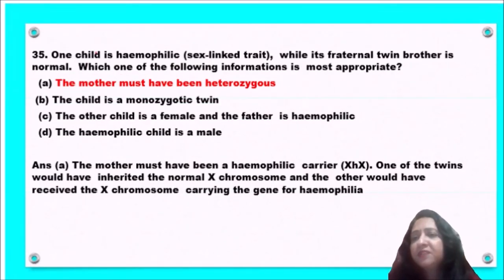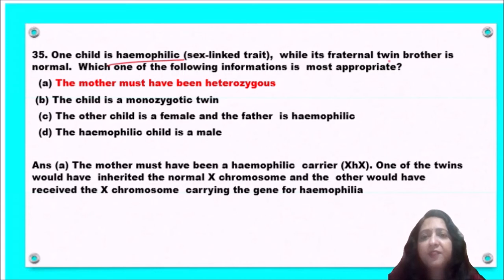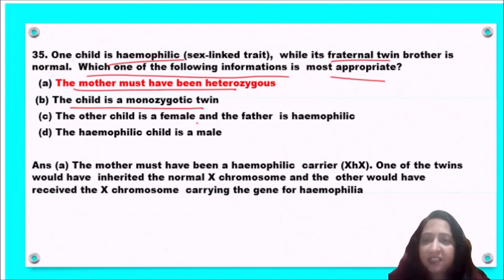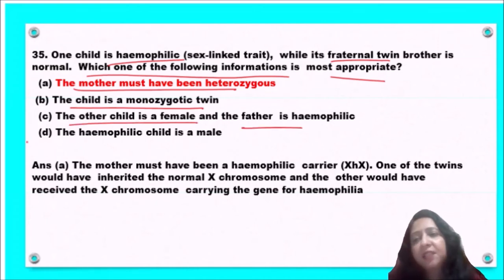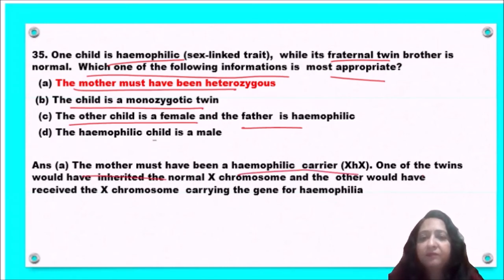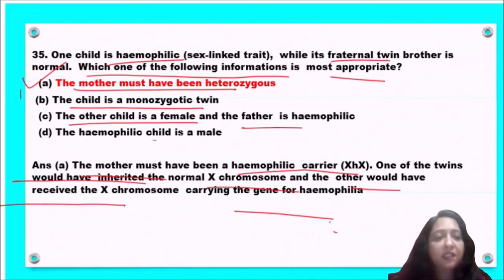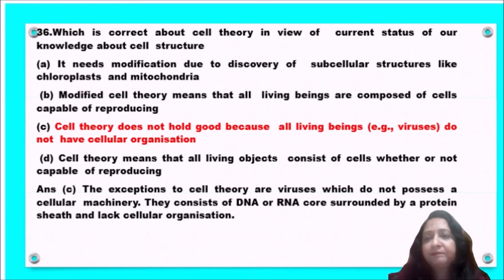Next question: one child is hemophilic while its fraternal twin brother is normal. Which information is most appropriate — the mother must be heterozygous; the child is a monozygotic twin; the other child is female and father is hemophilic; or the hemophilic child is male? The mother must be a hemophilic carrier, and one twin inherited the normal X chromosome while the other received the X chromosome carrying the hemophilia gene. So option A — the mother must have been heterozygous — is the correct answer.